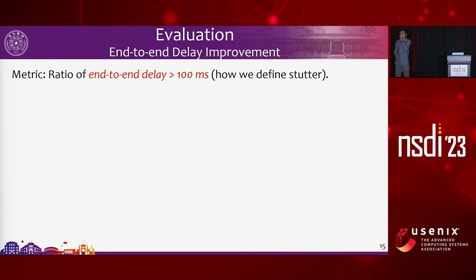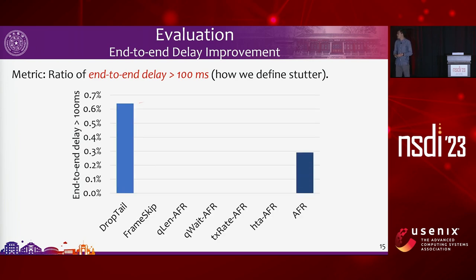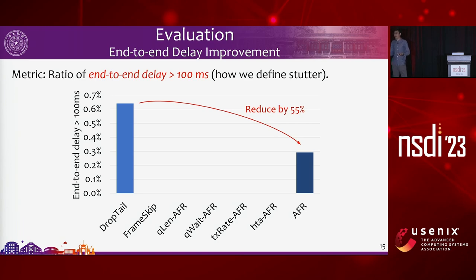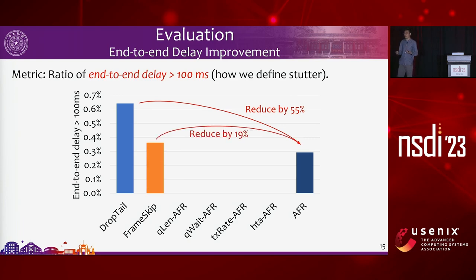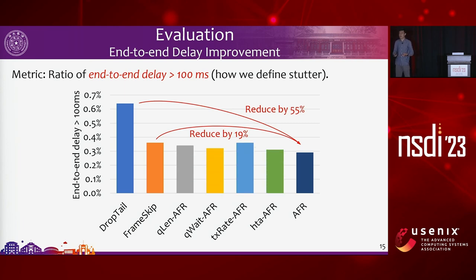The metric we evaluate is the ratio of end-to-end latency exceeding 100 milliseconds, which is how we define a stall. AFR can reduce the stall ratio by more than half compared to drop tail. Even compared to frame skip, which requires codec modification, AFR still achieves around 20% improvement. Further ablation of different design blocks within AFR shows additional improvements.